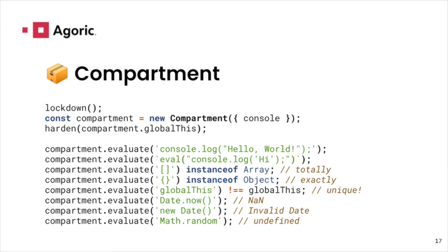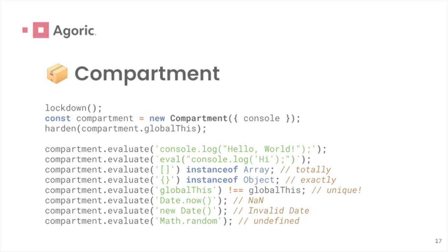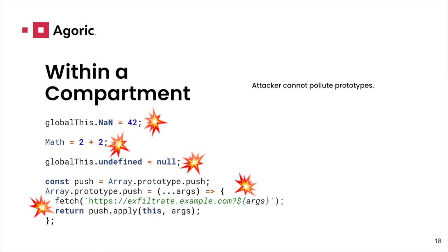The host environment still has access to lots of powerful objects, maybe even powerful modules, and can delegate these powers to child compartments. Within a compartment, prototype pollution attacks through the shared intrinsics are not possible, and the Harden function is available for programs to prevent prototype pollution on their own objects. You can't subvert the definition of NaN, you can't redefine math, you can't munch the shared prototypes — you can only get what your host gave you.